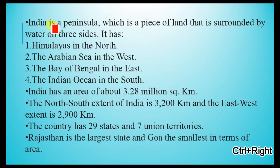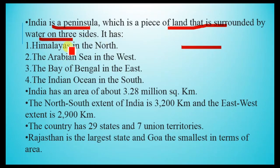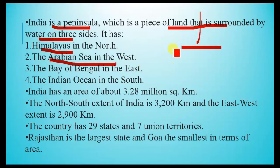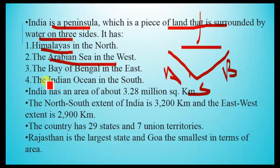India is a peninsula of which three sides are surrounded by water bodies and one side is connected to the land masses. It has the Himalayas in the north, the Arabian Sea in the west, the Bay of Bengal in the east, and the Indian Ocean to the south. India has an area of 3.28 million square kilometers.